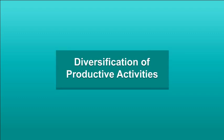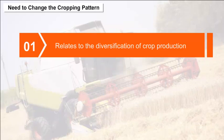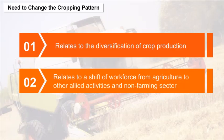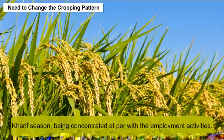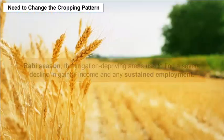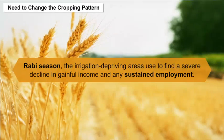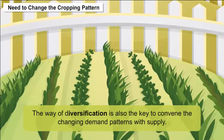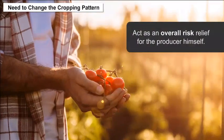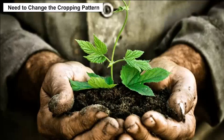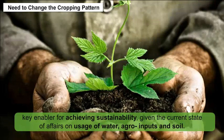Diversification of Productive Activities includes two aspects: first, diversification of crop production, and second, a shift of workforce from agriculture to other allied activities and the non-farming sector. Excluding the Kharif season, employment activities are concentrated mainly during the Rabi season. Irrigation-deprived areas used to find a severe decline in gainful income and sustained employment. Diversification is also the key to meeting changing demand patterns with supply and to acting as an overall risk relief for the producer. It is also a key enabler for achieving sustainability, given the current state of affairs on usage of water, agro-inputs and soil.